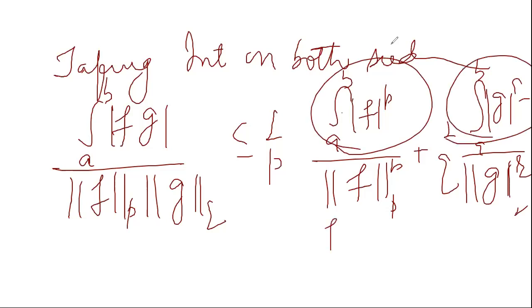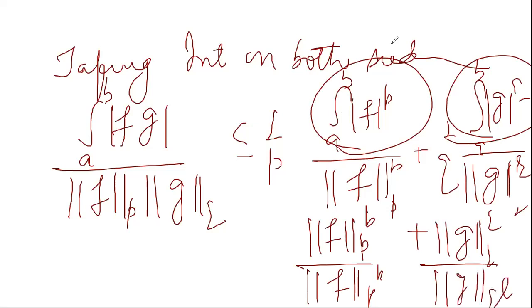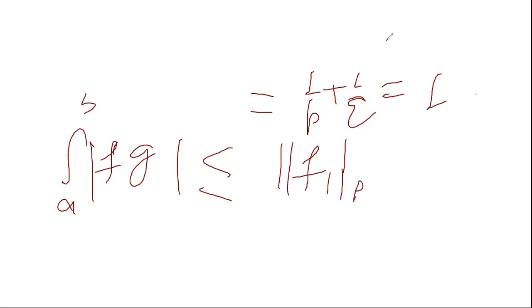What is the value? This value is the same as what is written below. So the upper and lower will cancel out. Here is 1 by p and here is 1 by q. So what you have got? On this side you get 1 by p plus 1 by q equals 1. Compare from there: integration A to B F times G mod is less than or equal to - the denominator goes up - norm of Fp into norm of Gq.